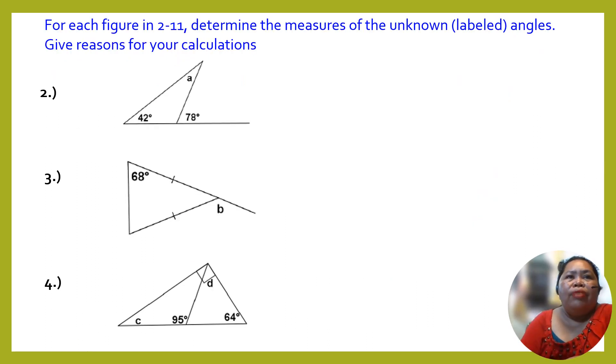Now for figure 2 to 11, determine the measure of unknown labeled angles, give reasons for your calculation. If you want to try. Let's see. This is the hint. Now your a, this is 72, 78, all you have to do is subtract, 78 minus 42. I don't know if you can get this.